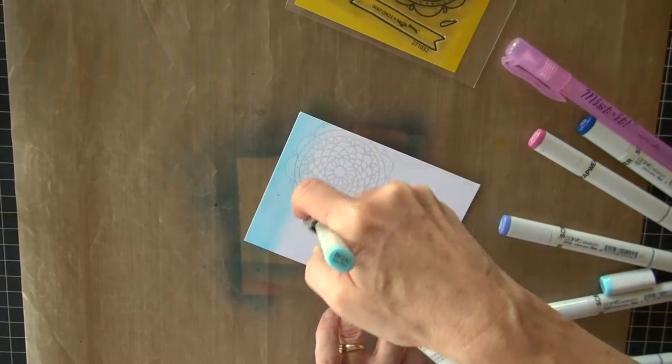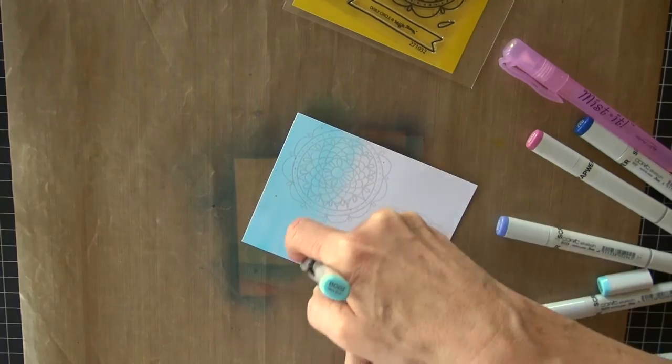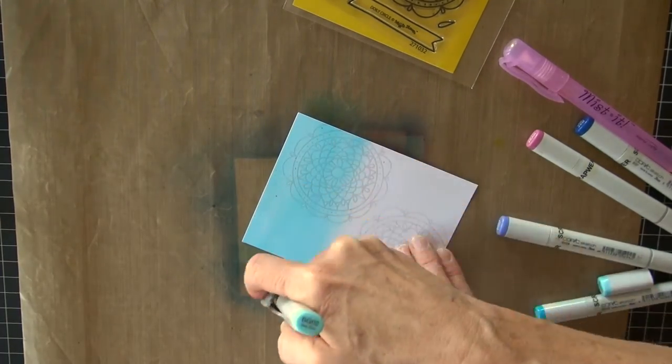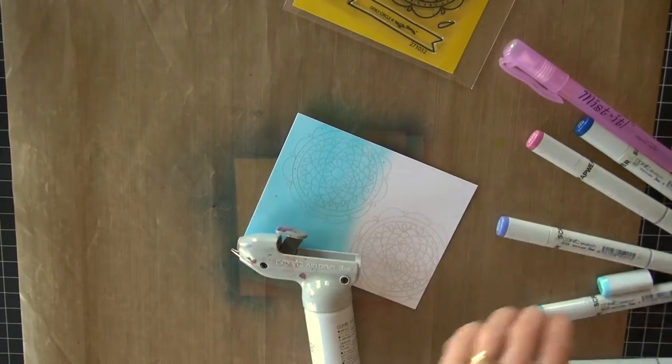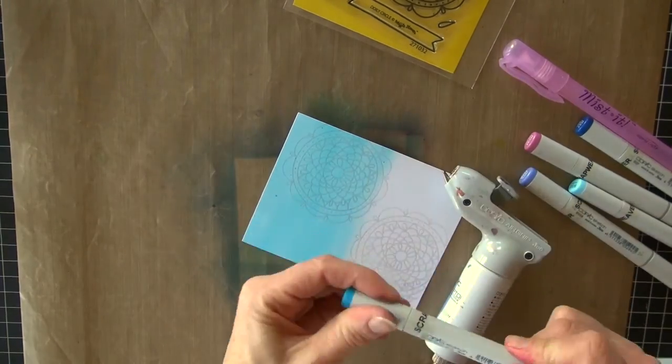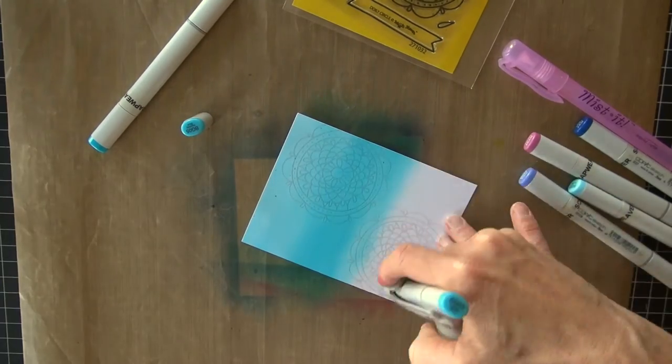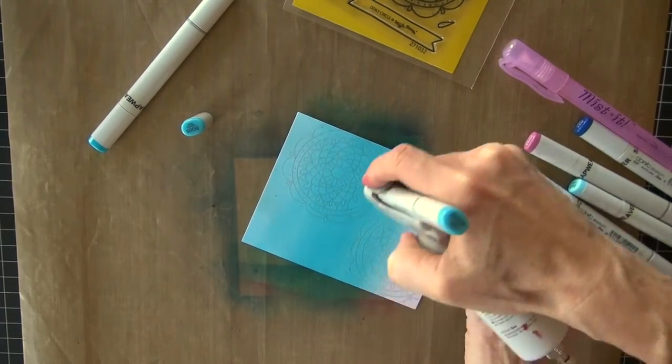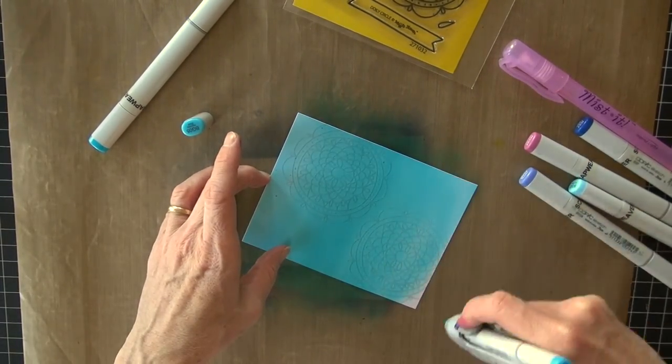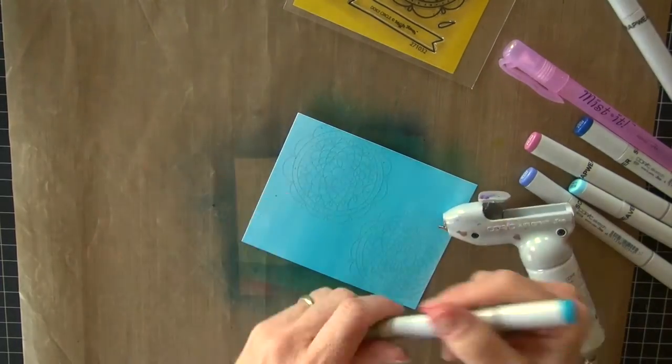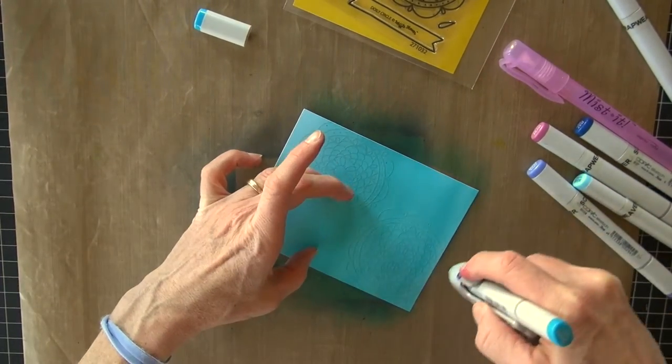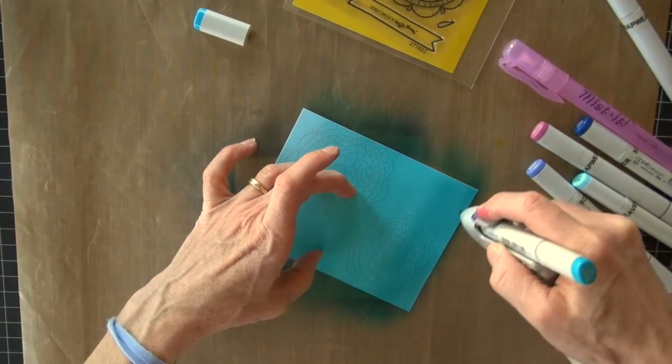So I'm going to go for an ombre effect on this card. I started with a lighter blue. I have B00. And then halfway through, I switch markers. I'm going to switch to a B02. I overlap that, and then go all the way down to the base, or the other end of the card. And then I switch one more time to a B04, and hit the one side with that.